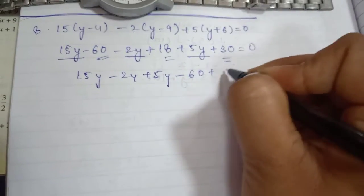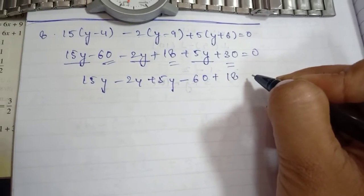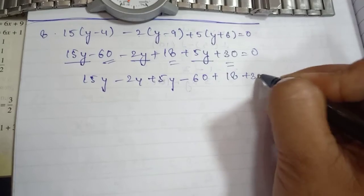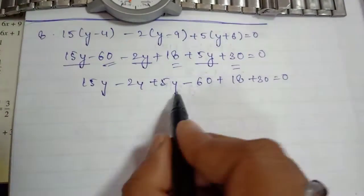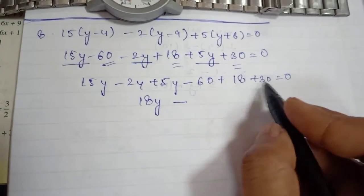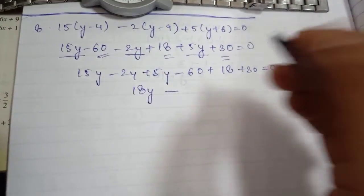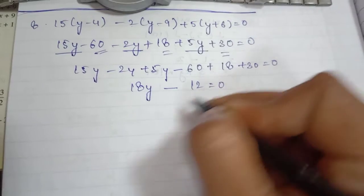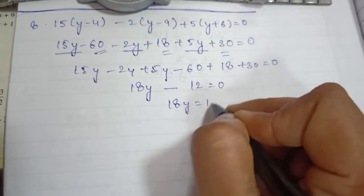Here we have 18y, now this becomes -12 = 0, so 18y = 12.